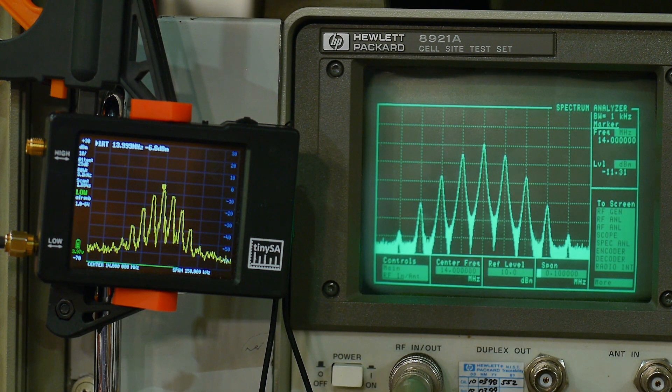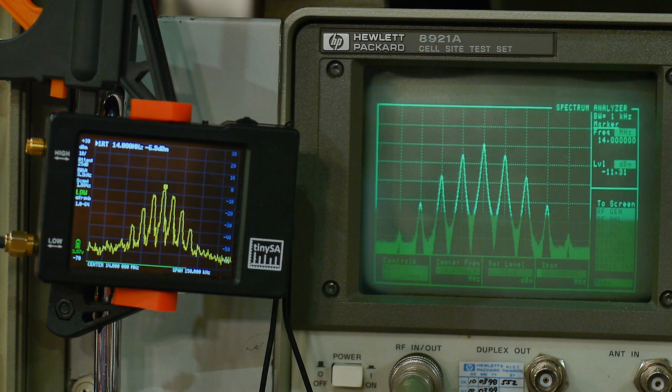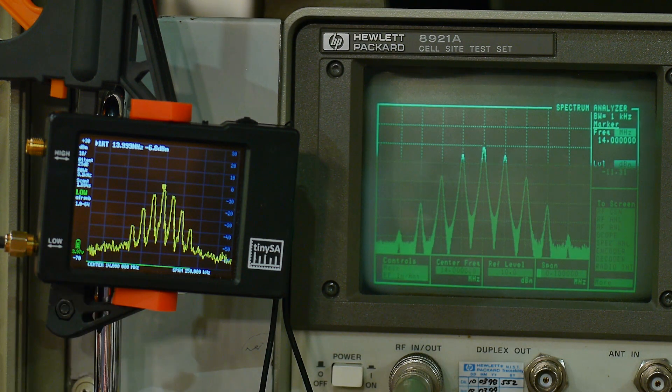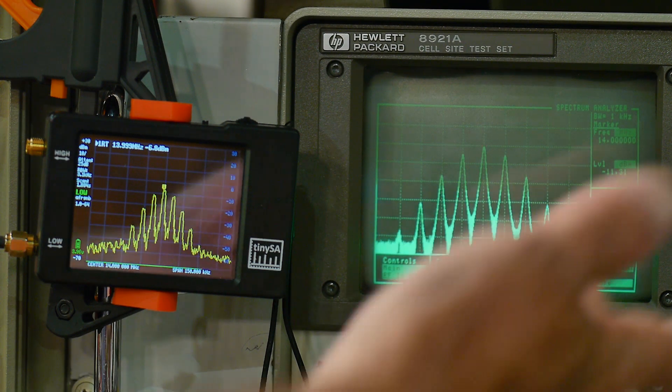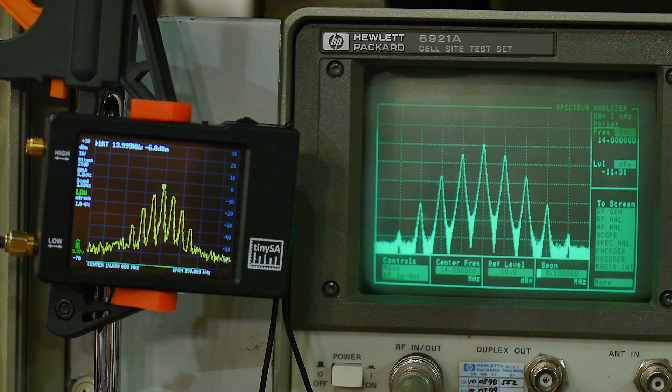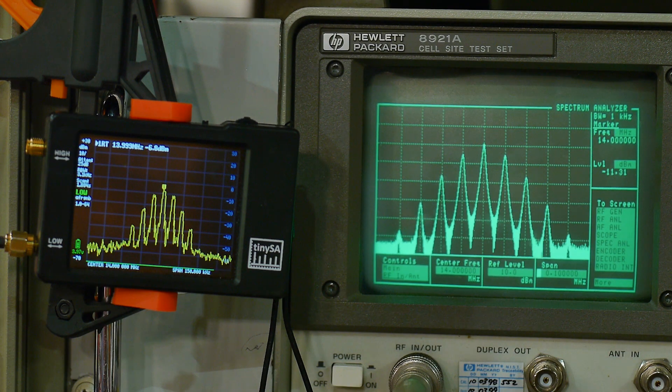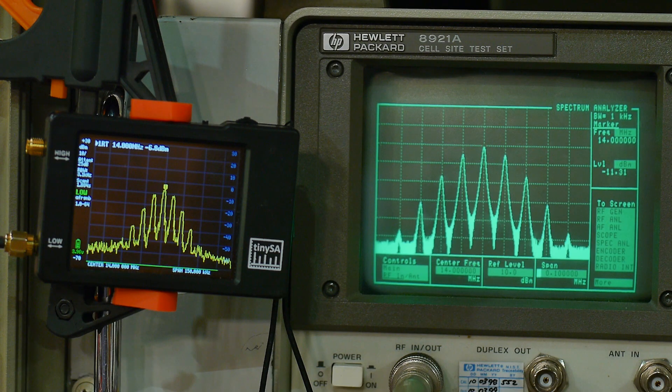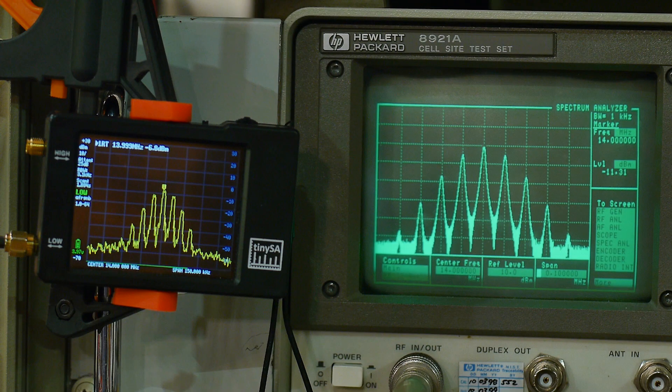So it's too bad that they couldn't detect that particular case and have the TinySA go into the correct range. Obviously, other instruments know how to do that. So I'm not sure exactly what the problem is. But in FM mode, it does seem to be choosing a reasonable attenuation.